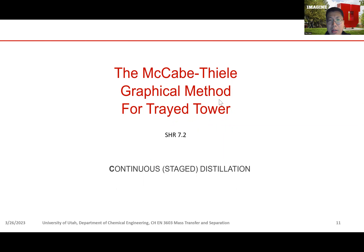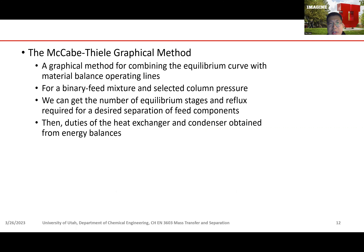Next we're going to talk about the McCabe-Thiele graphical method for analyzing distillation towers. The McCabe-Thiele graphical method is a graphical method for combining the equilibrium curve with material balance operating lines — we've seen this previously for the absorption tower. It's for a binary feed mixture at a selected column pressure, and from this analysis we can get the number of equilibrium stages and the reflux ratio required for a desired separation. Once we get the number of equilibrium stages and the reflux requirement, we can compute the duties on the heat exchanger and condenser based on energy balance.